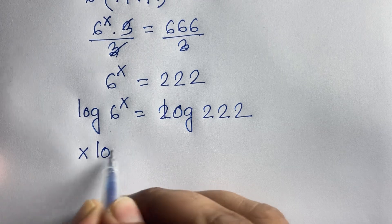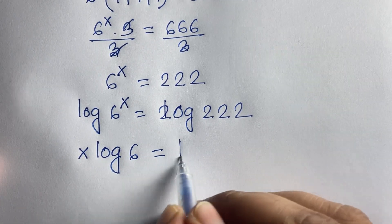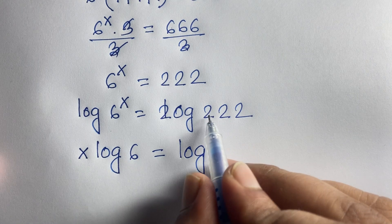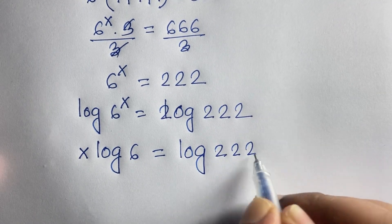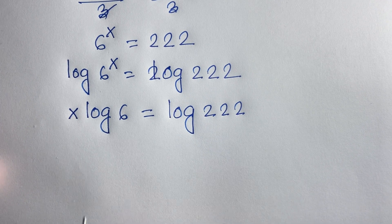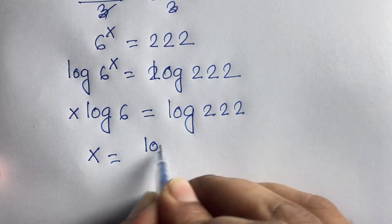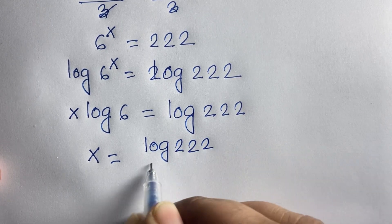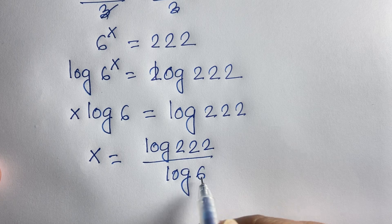So x times log 6 is equal to log 222. Now if I divide both sides by log 6, we find that x is equal to log(222) over log(6).